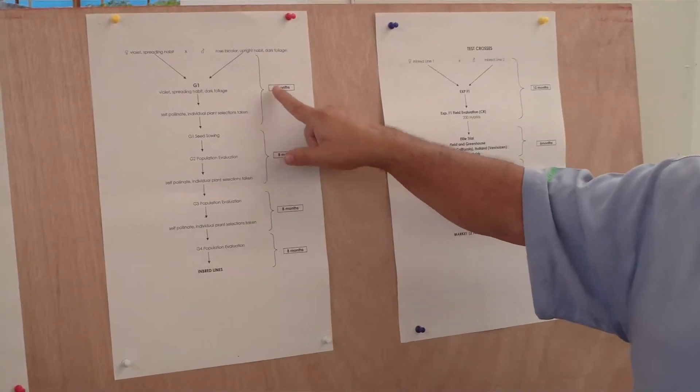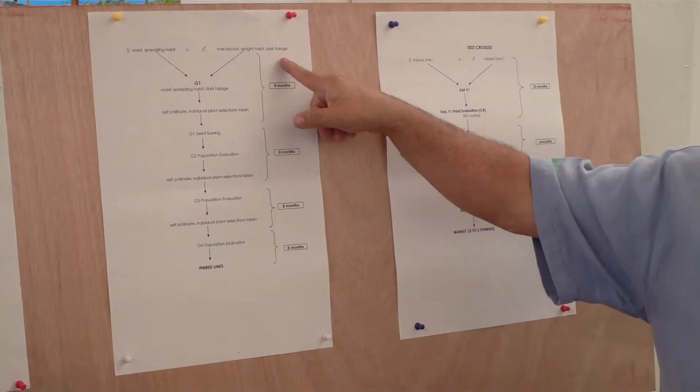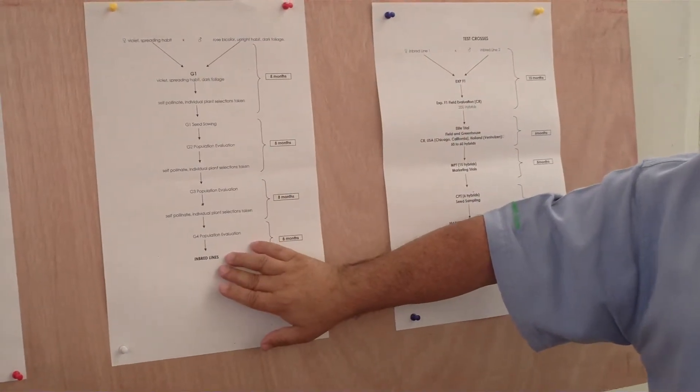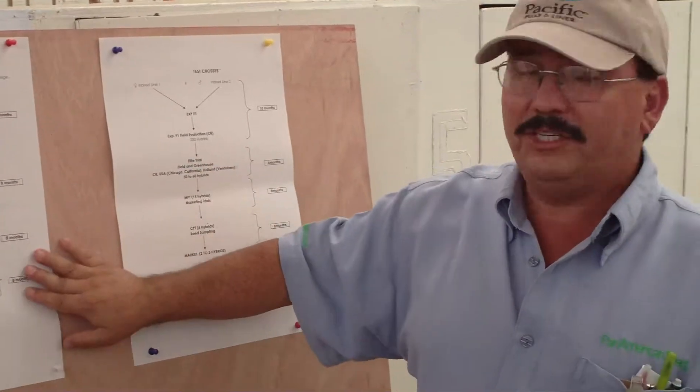In each generation it takes about one year. In other words, to develop your embryo lines you are going to need about five years.